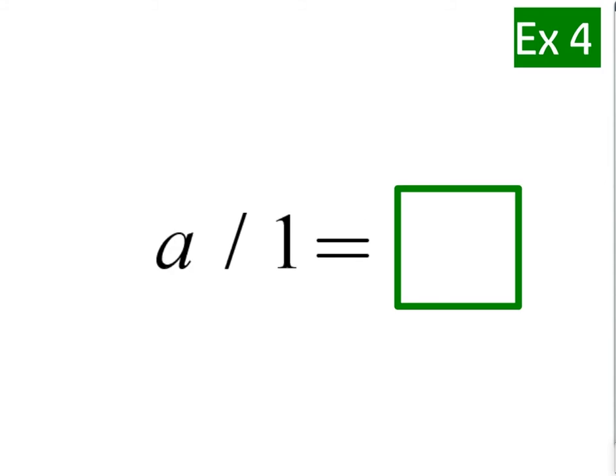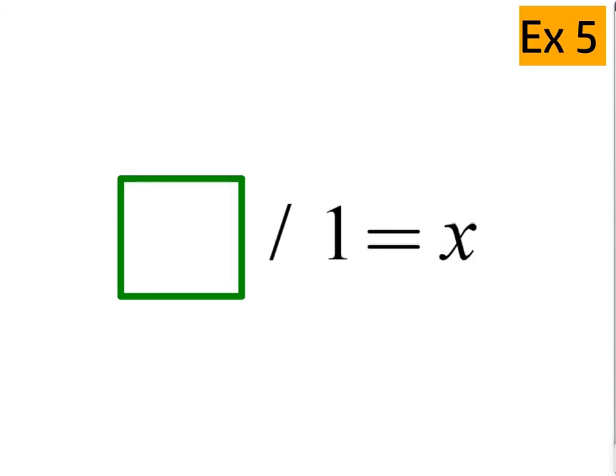All right, how about this time? A number divided by 1 gives you what? If you said the same number A, or any number, you are correct. A divided by 1 would give you A back. Okay, now we have a number divided by 1 gives you X. Well, if I divided by 1 and I ended up with X, then I must have started with X.